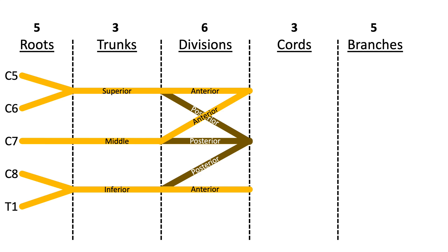You've already got three cords by just continuing these lines. The posterior divisions form what is called the posterior cord. The anterior divisions from the superior and middle trunk form the lateral cord, and the anterior division from the inferior trunk forms the medial cord.